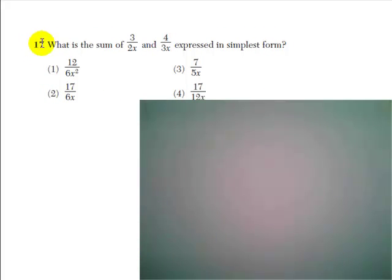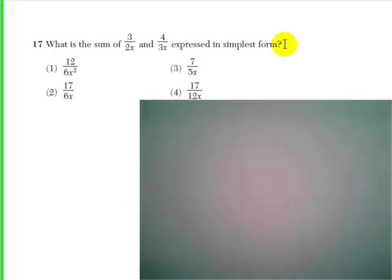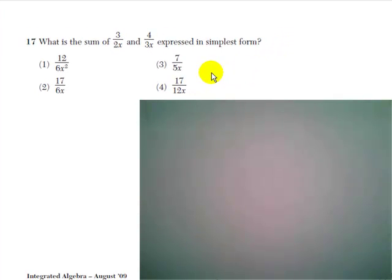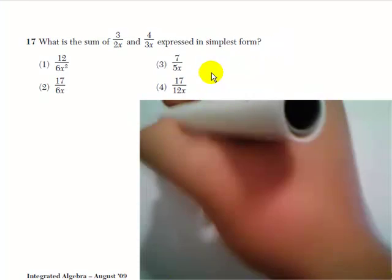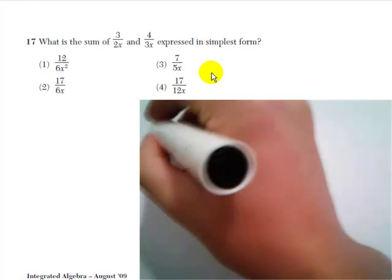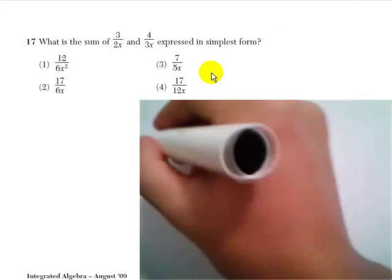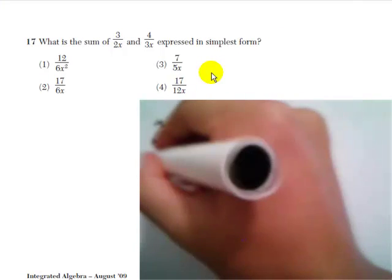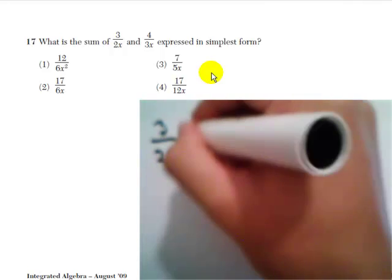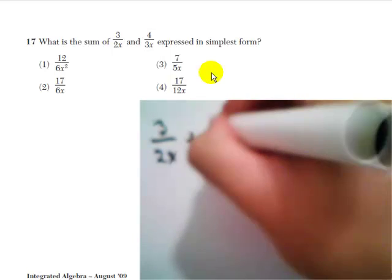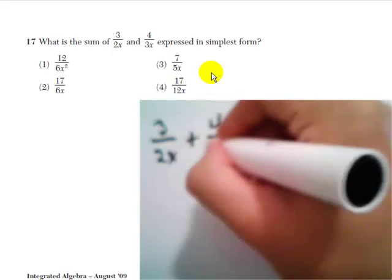Question 17: What is the sum of 3 over 2x and 4 over 3x expressed in simplest form? So we need to add 3 over 2x and 4 over 3x.